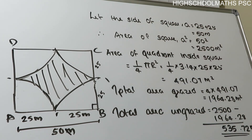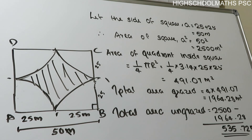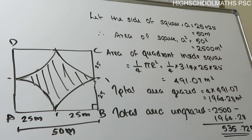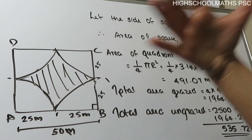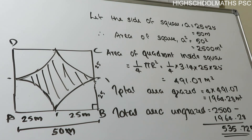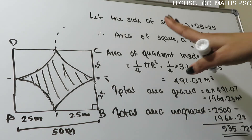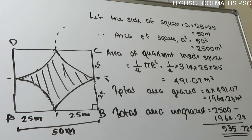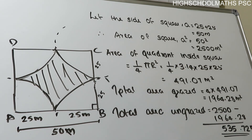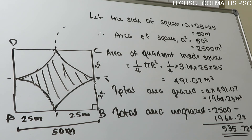Let the side of the square be 50 meters (25 + 25). Area of square plot is 50 × 50 = 2500 meters square. Area of each quadrant is 1 by 4 pi r square. With radius 25 meters: 1 by 4 × 22 by 7 × 25 × 25. The value is approximately 491.07 meters square per quadrant.